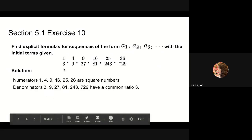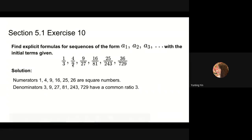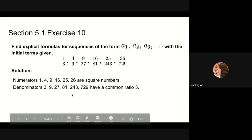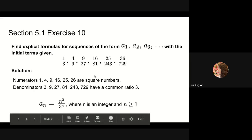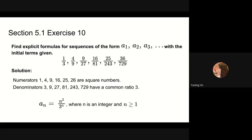We also observe that each successive item in the denominator is 3 times greater than the one before, so the denominator is a power of 3 and should have the form 3 to the nth power. The explicit formula is a_n equals n squared over 3 to the nth power, where n is an integer and n is greater than or equal to 1.